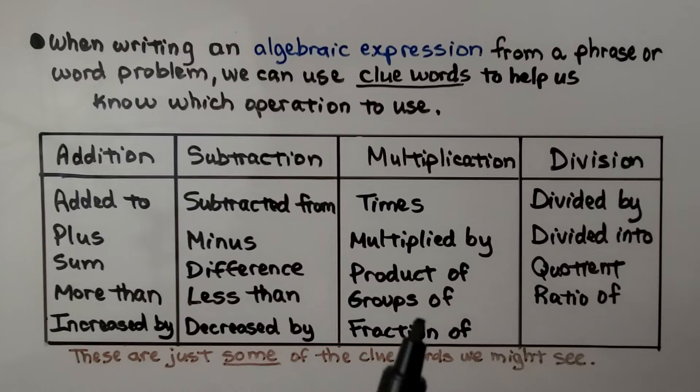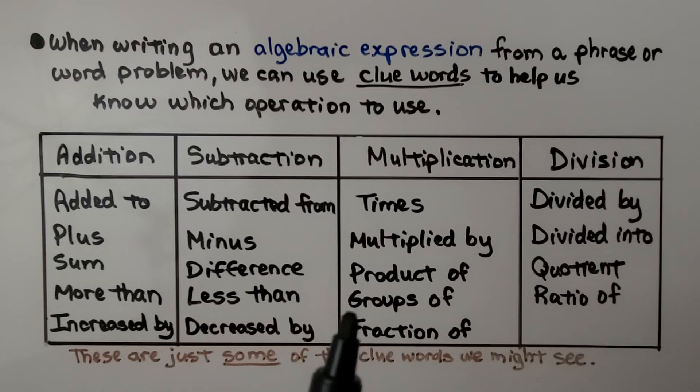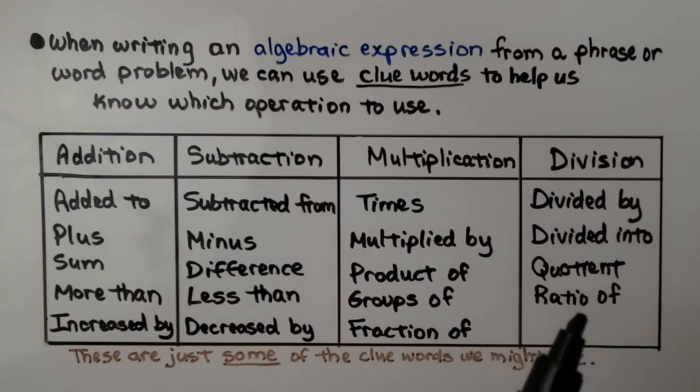For multiplication, we might see times, multiplied by, product of, groups of, or fraction of. And for division, we could see divided by, or divided into, quotient, or ratio of. And these are just some of the clue words we might see.